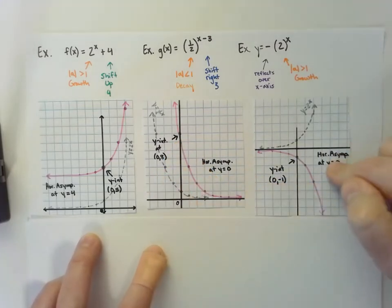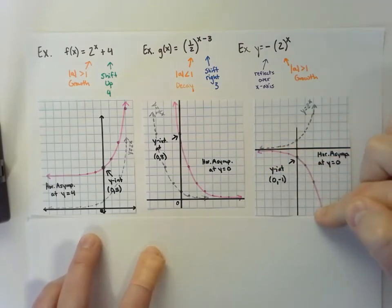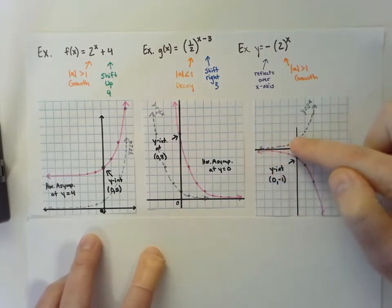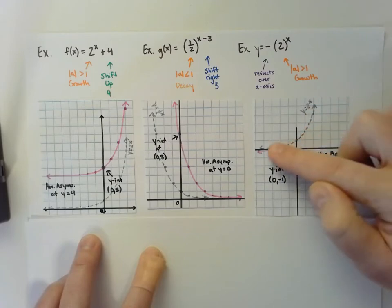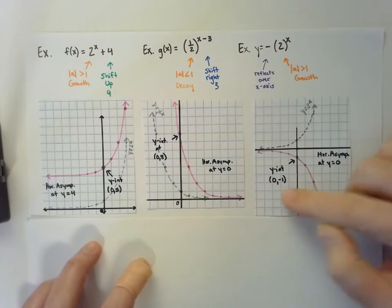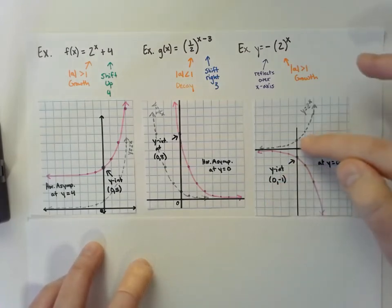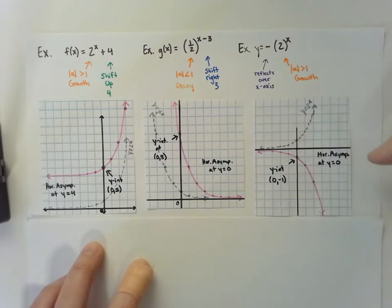In the third one, this shows you how it would reflect over the x-axis and how that would look. In gray, I have my basic parent function for growth, but then in pink, I reflected it over the x-axis. My y-intercept is at (0,-1) now where it used to be at (0,1). The horizontal asymptote would still be at y = 0 for that one.